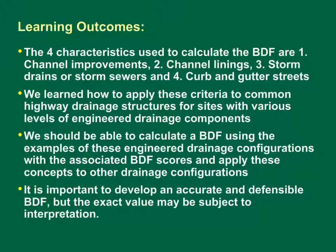In this module, we learned that the four characteristics used to calculate the BDF are: (1) channel improvements, (2) channel linings, (3) storm drains or storm sewers, and (4) curb and gutter streets. We learned how to apply these criteria to common highway drainage structures for sites with various levels of engineered drainage components, and how to calculate a BDF using examples of these configurations. It is important to develop an accurate and defensible BDF, but the exact value may be subject to interpretation. Fortunately, misspecifying the BDF by a few points may not be a critical error for modeling small highway sites.